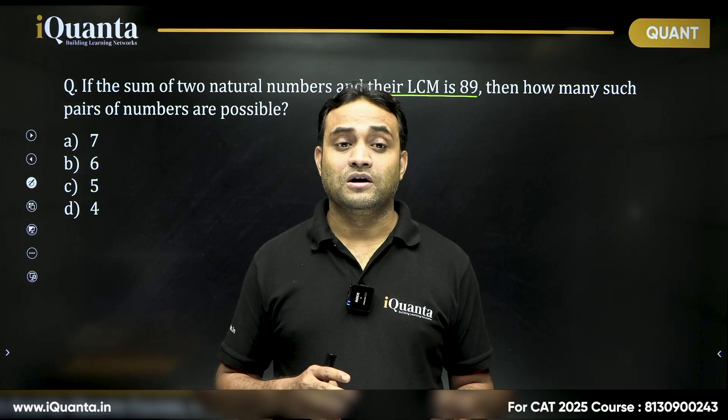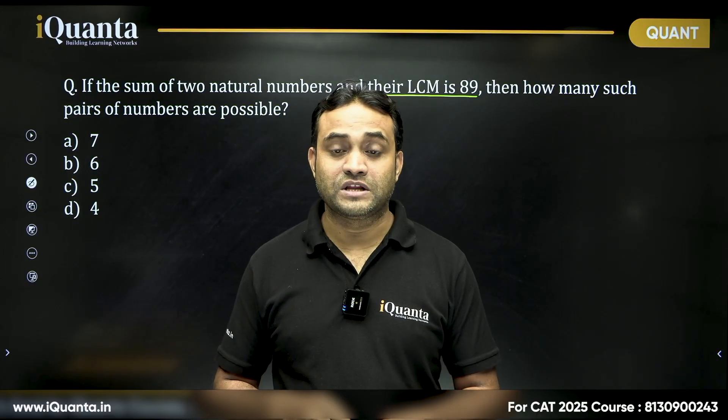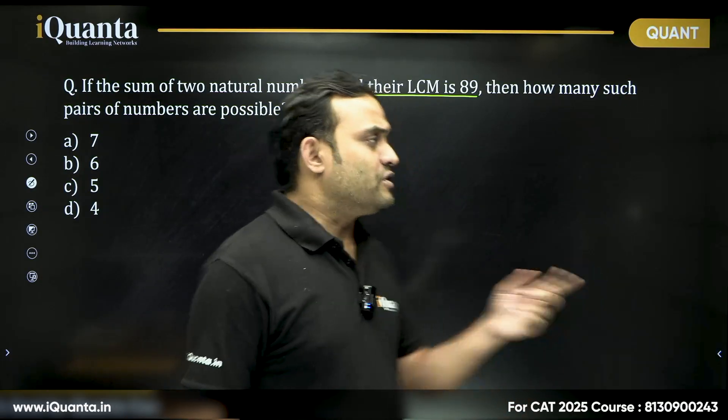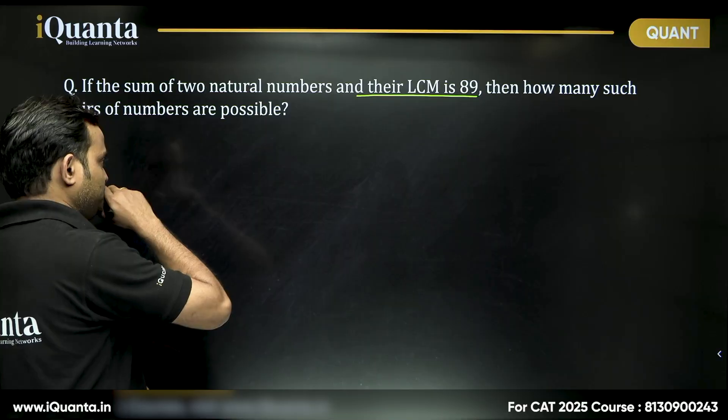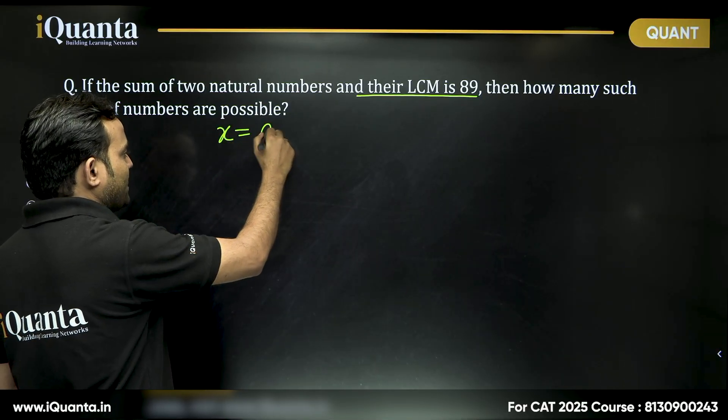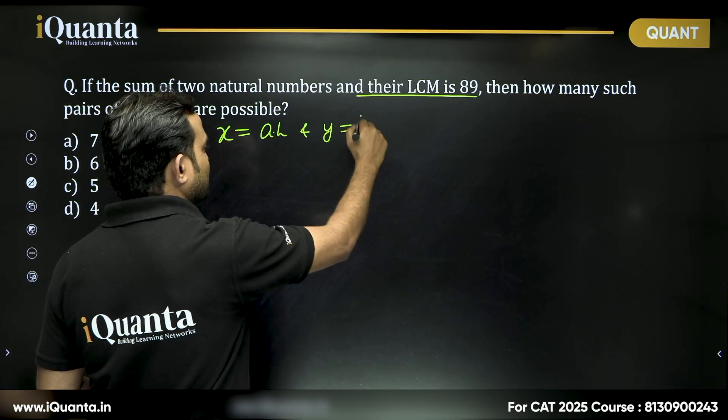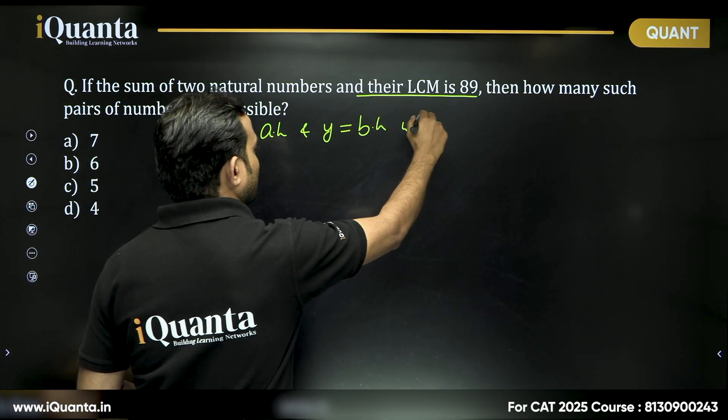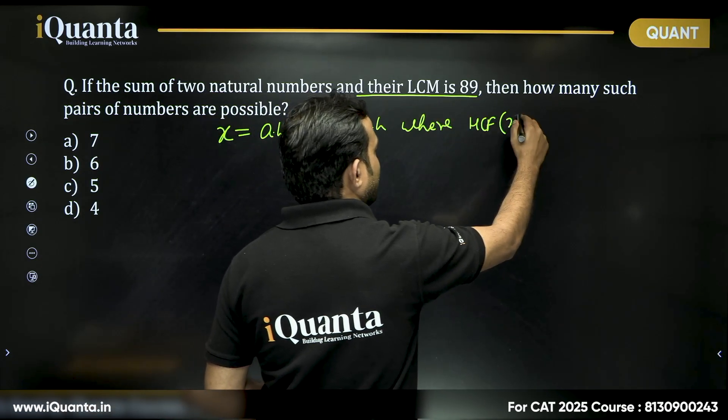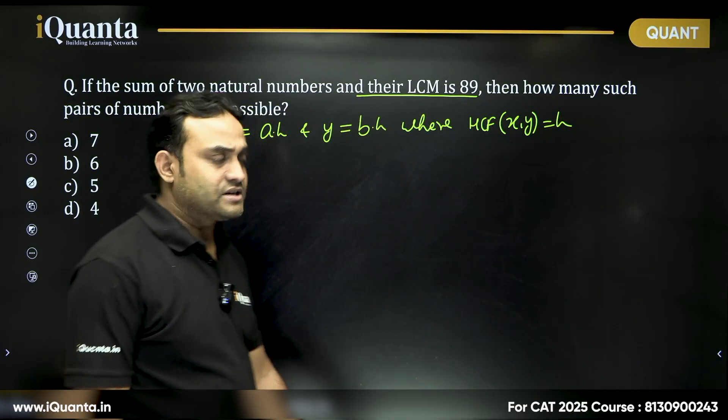To resolve this issue, we'll assume two numbers X as AH and Y as BH, where HCF of X and Y is equal to H, right? So I'm taking two numbers X and Y where HCF of these two numbers is H.